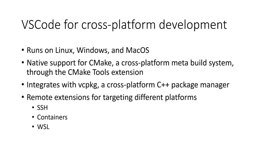Now that you've seen some of the core C++ language features in VS Code, let's talk about cross-platform development. Cross-platform development is super popular these days — we see in a lot of survey feedback that people are developing for more than one platform or a platform different from their host OS. VS Code runs on Linux, Windows, and macOS. It has native support for CMake, which is a cross-platform meta-build system. Because VS Code has such great support for CMake projects, you can have your CMake project as a cross-platform project and configure it in VS Code regardless of what OS you're using.